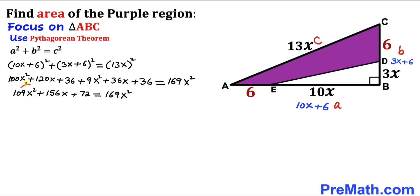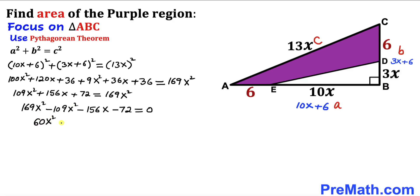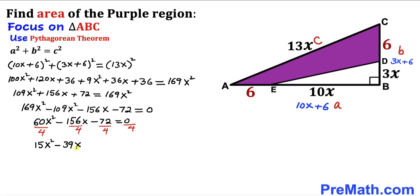Moving everything to the right-hand side and combining like terms gives us 60x squared minus 156x minus 72 equals 0. We can see this equation is divisible by 4 across the board. Dividing each term by 4, we get 15x squared minus 39x minus 18 equals 0.